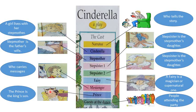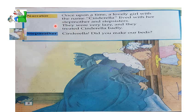Now you know all the characters in the story. I want you to imagine the actions and the events. Let's read the story together. The narrator: Once upon a time, a lovely girl named Cinderella lived with her stepmother and stepsisters. They were very lazy and they treated Cinderella badly.